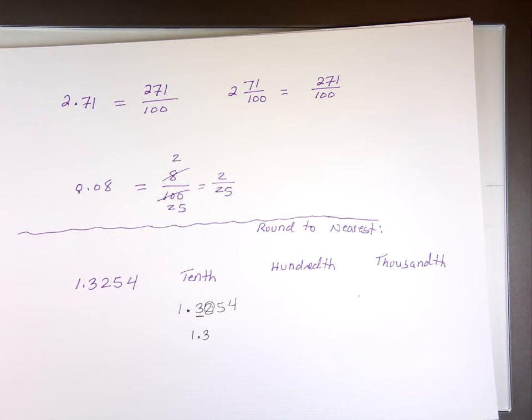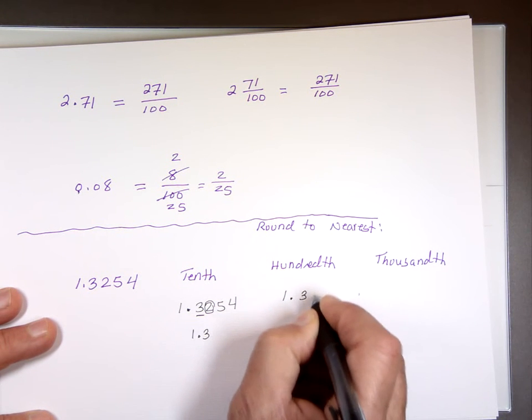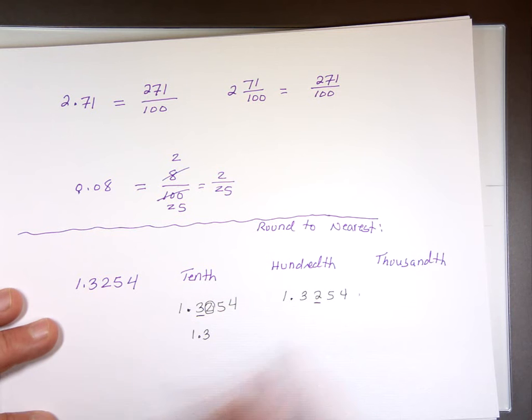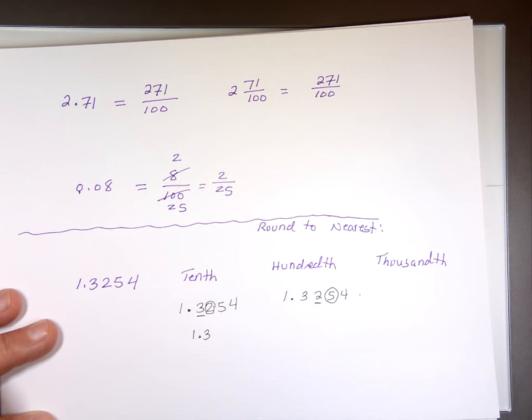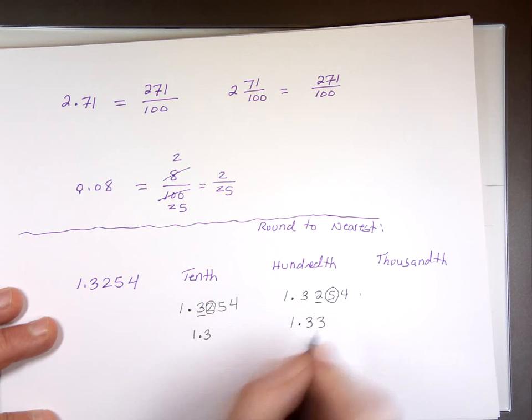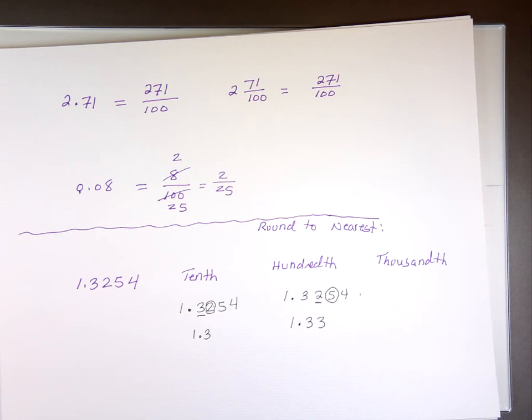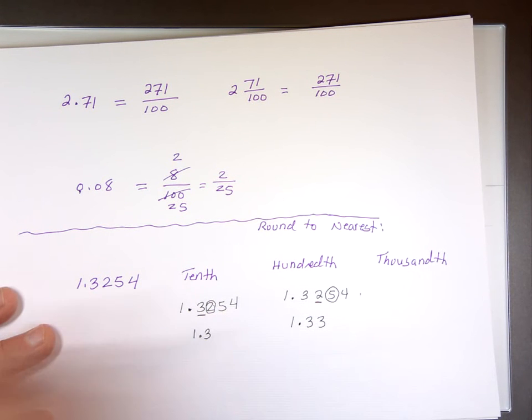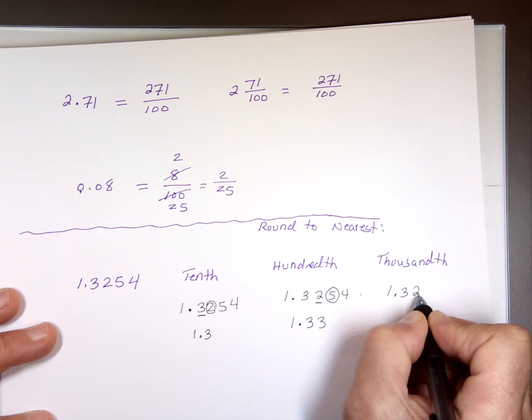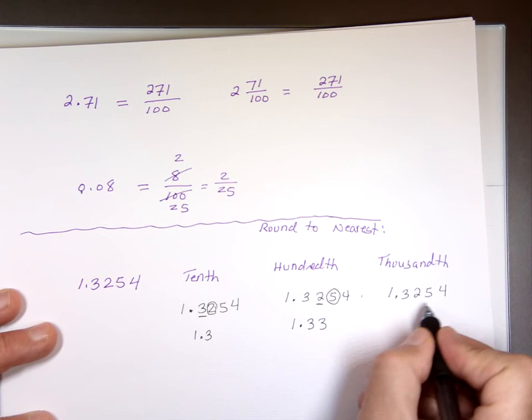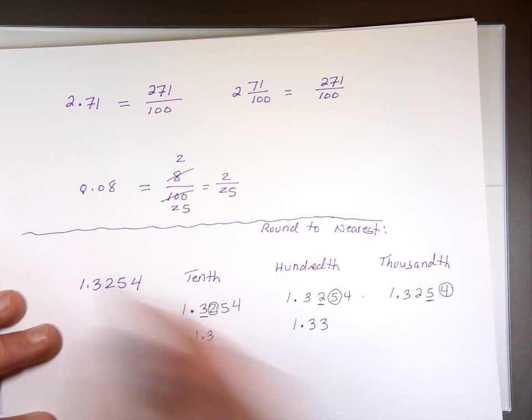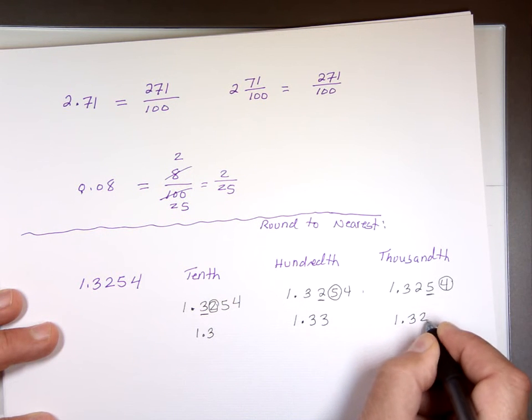Now, the 100th. 1.3254. Where is the 100th location? Right here. Is this digit 5 or more? Yes. Add 1 to this. That will be what? 1.33. 1,000. You can. 1.3 if you take the original number. The 1,000th right here. Is that 5 or more? No. We drop it.